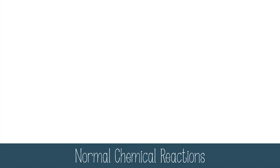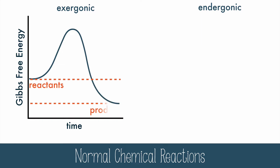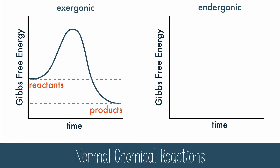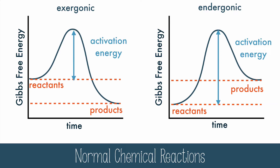In normal chemical reactions, you can classify a reaction as exergonic or endergonic. Exergonic reactions release energy because the energy of the products is lower than the energy of the reactants. Endergonic reactions require energy because the products are at a higher energy than the reactants. Exergonic reactions will generally happen faster because the activation energy is smaller. Activation energy is the minimum amount of energy required to overcome the transition state of a reaction.